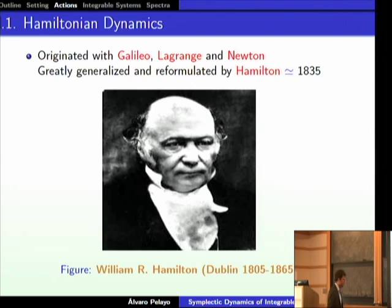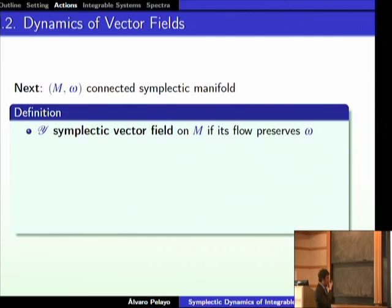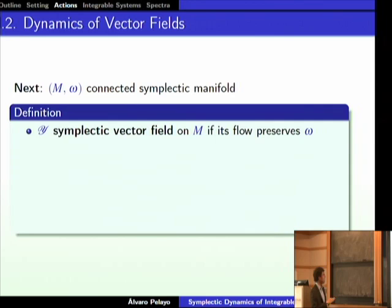Now let me go to Hamiltonian dynamics, which is the topic of my talk. As I said at the beginning, this originated with Galileo, Lagrange, and Newton, and was greatly generalized by Hamilton. I'm going to start with a connected symplectic manifold, which can be compact or not. Sometimes I will assume that it's compact, but sometimes I will not — particularly when I discuss integrable systems, where requiring compactness is too much of a restriction.